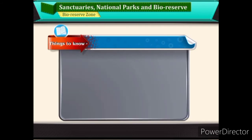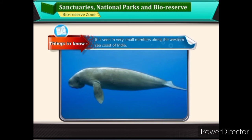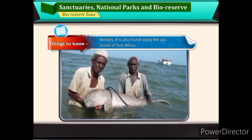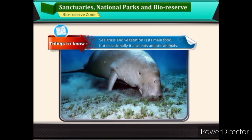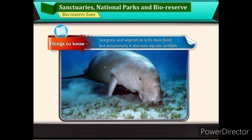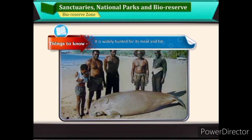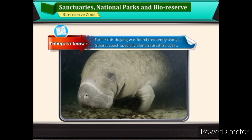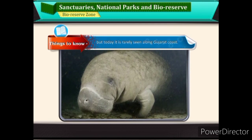Things to know — Dugong: This is an aquatic animal seen in very small numbers along the western sea coast of India. It is also found along the sea coasts of East Africa, Southeast Asia and the northern coast of Australia. Seagrass and vegetation is its main food, but occasionally it also eats aquatic animals. It is widely hunted for its meat and fat. Earlier, the Dugong was found frequently along the Gujarat coast, specially along the Saurashtra coast, but today it is rarely seen along the Gujarat coast.